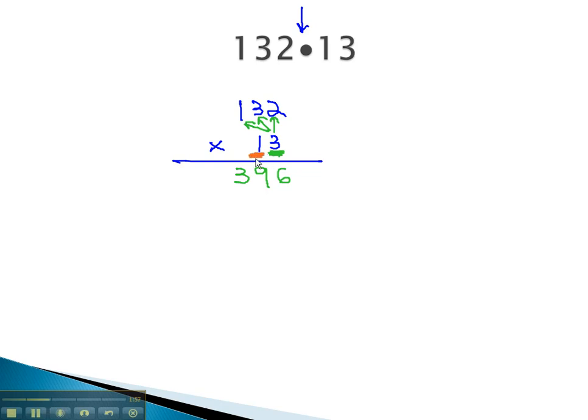Now, we can move on to the next digit. When we move over one digit, we need a 0 to hold the place value, and we will multiply the 1 by each digit. 1 times 2 is 2. 1 times 3 is 3. And 1 times 1 is 1. Finally, we will add these numbers together to get our final solution.